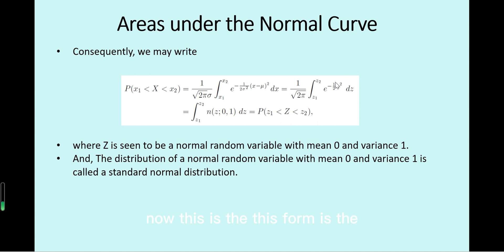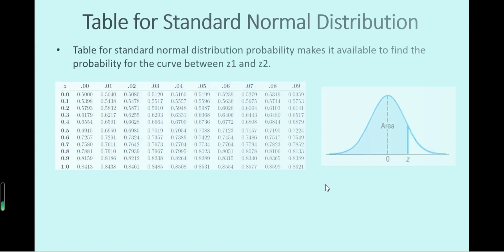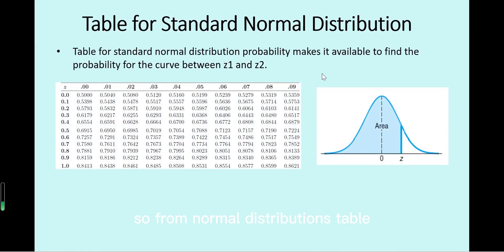The standard normal distribution density function has e raised to the power of minus one-half times z squared. From the normal distributions table, this applies to the z value.